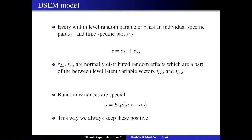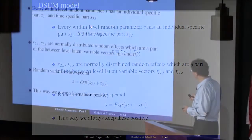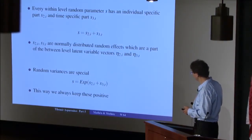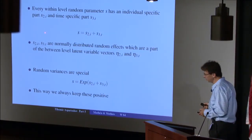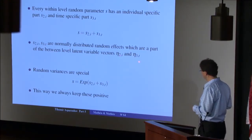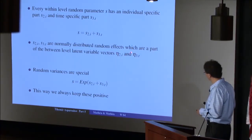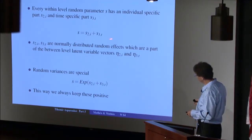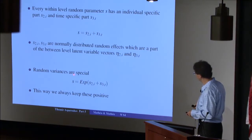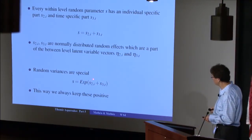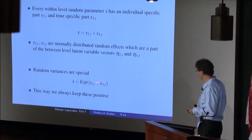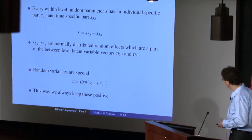In the cross-classified framework, every random effect consists of two portions: an individual-specific effect and a time-specific effect. When you introduce a random slope, you actually get two random slopes — one on each of the two between-levels. These are assumed normally distributed and treated as latent variables on those between levels. For random variances, a log-normal distribution is used where the random variance is the exponent of the sum of two random effects, one from each level, ensuring the variance stays always positive.